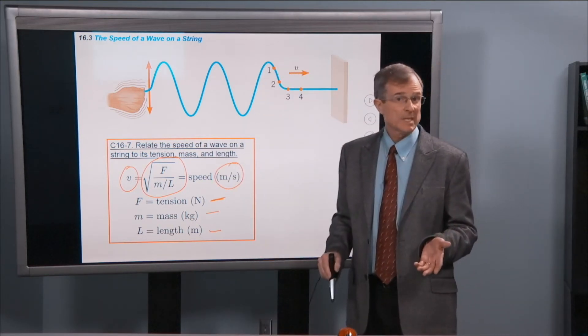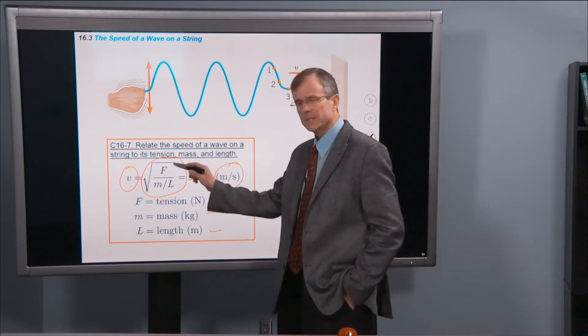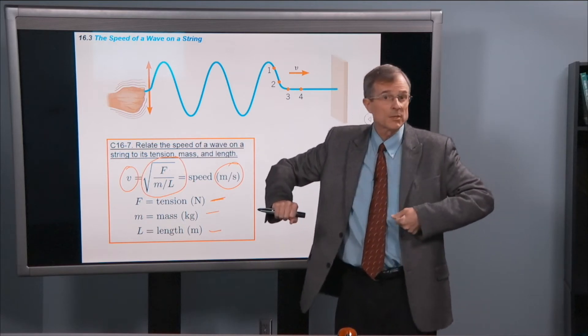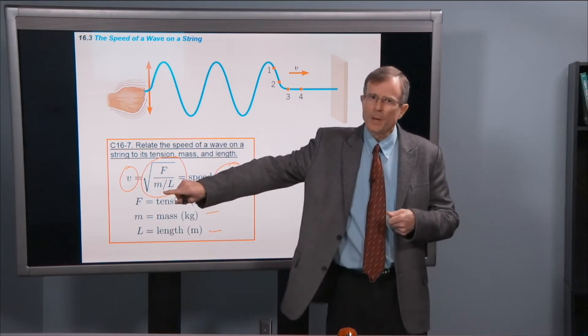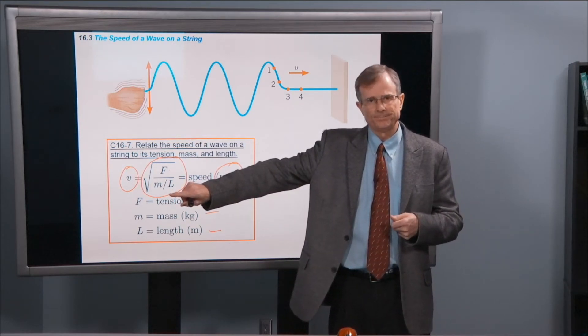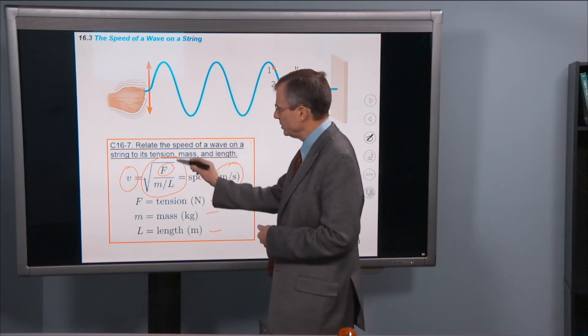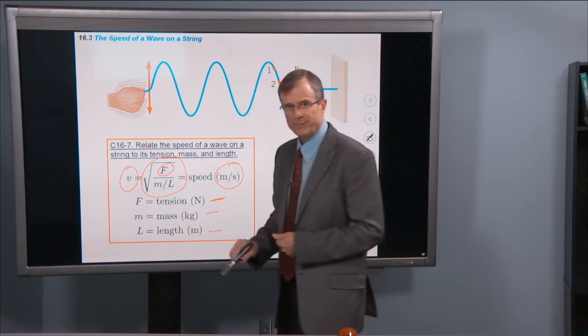Does this equation make sense? Well, yes it does. Because if I increase the tension in the string, I pull it more and increase the tension, then I might expect that wave to propagate faster down the string. And sure enough, if you increase the tension here and take the square root, since this is in the numerator, the speed will in fact increase.